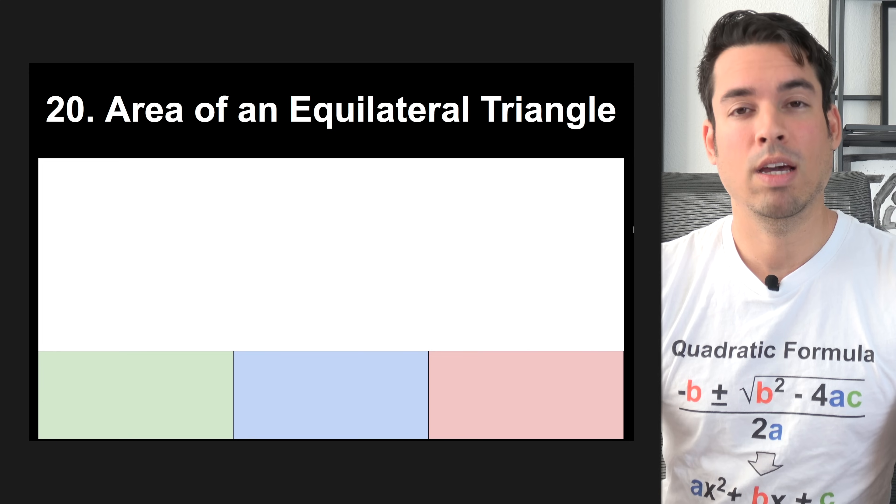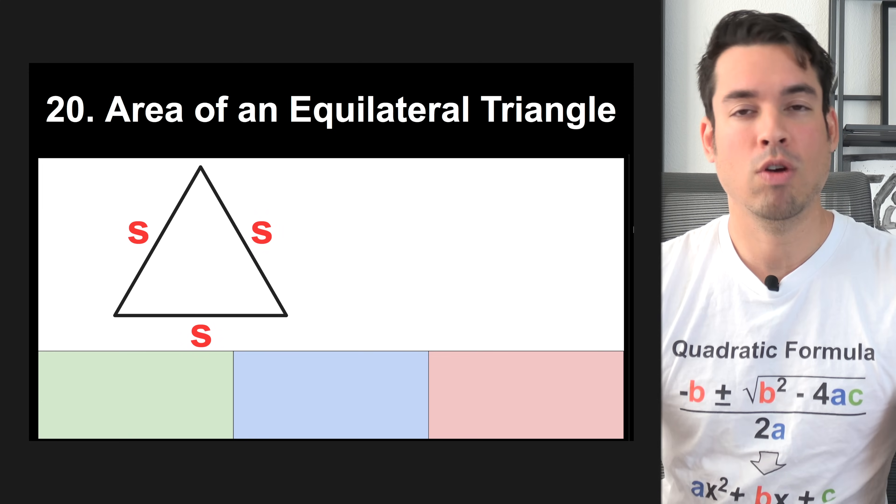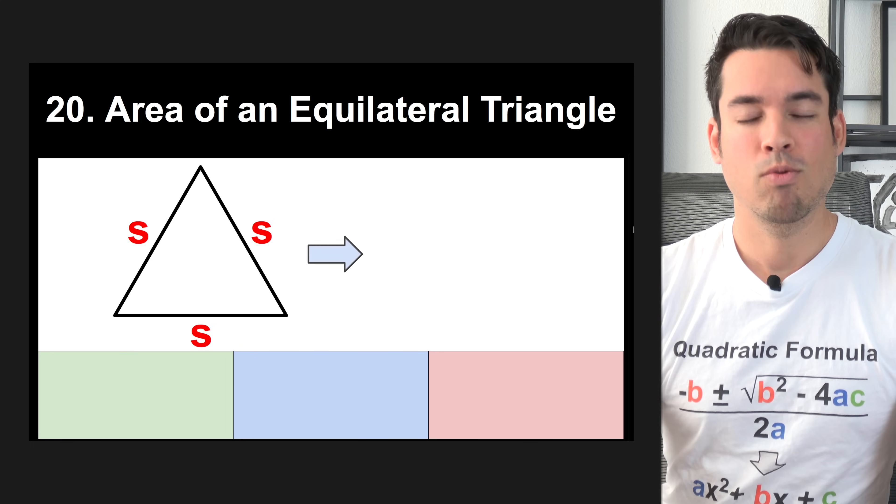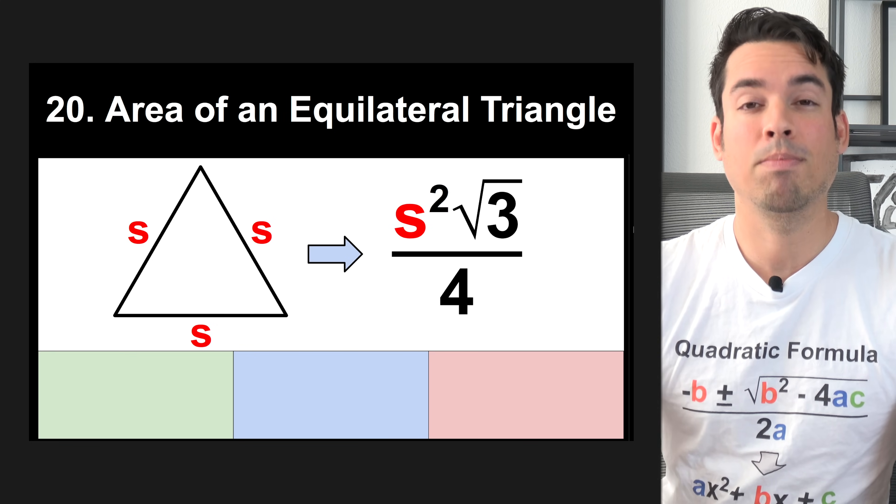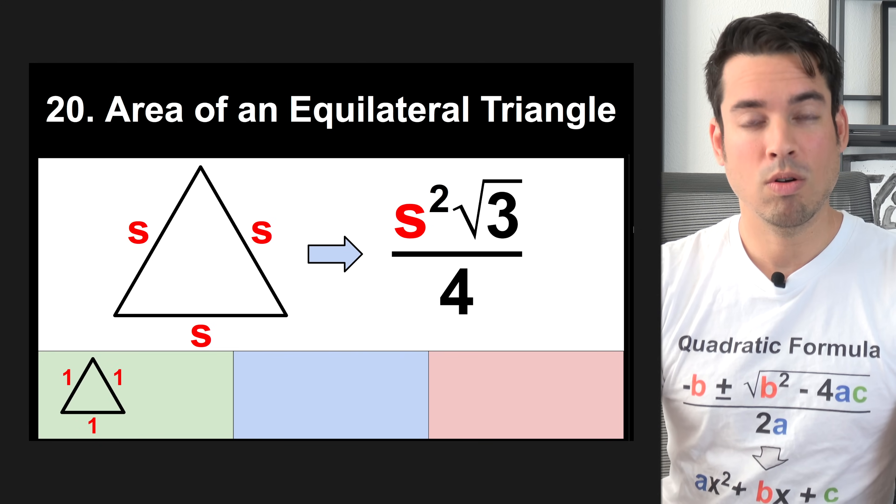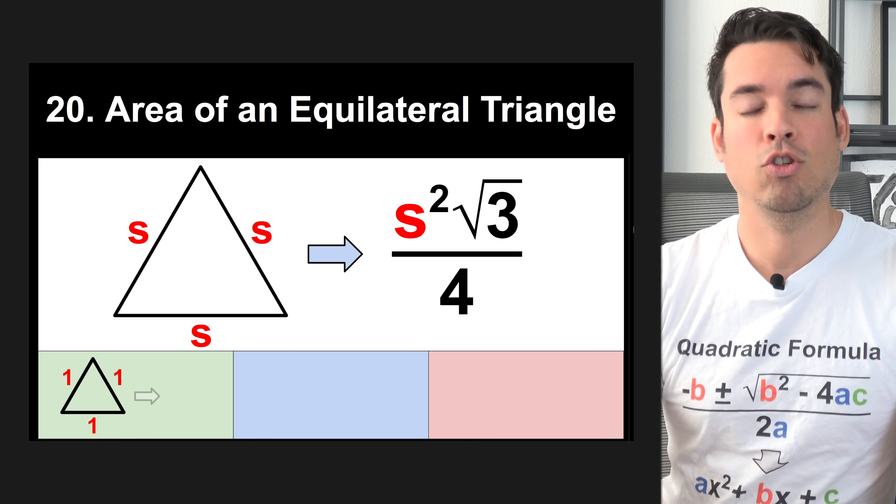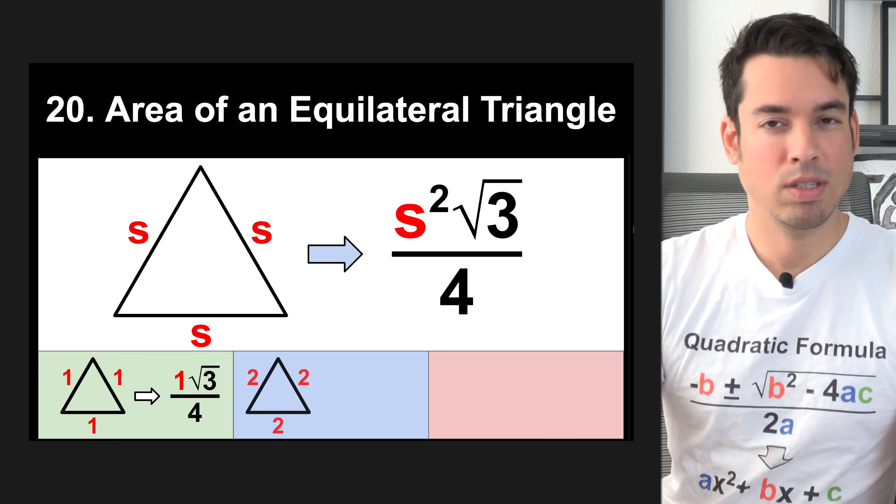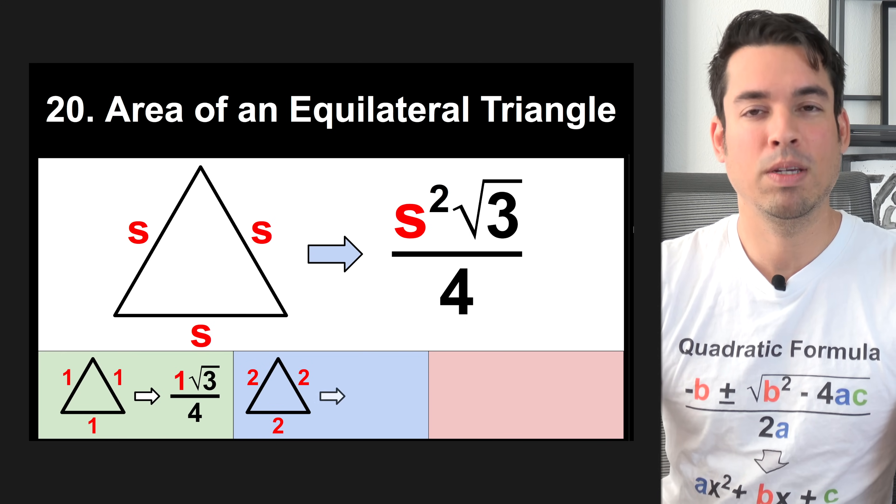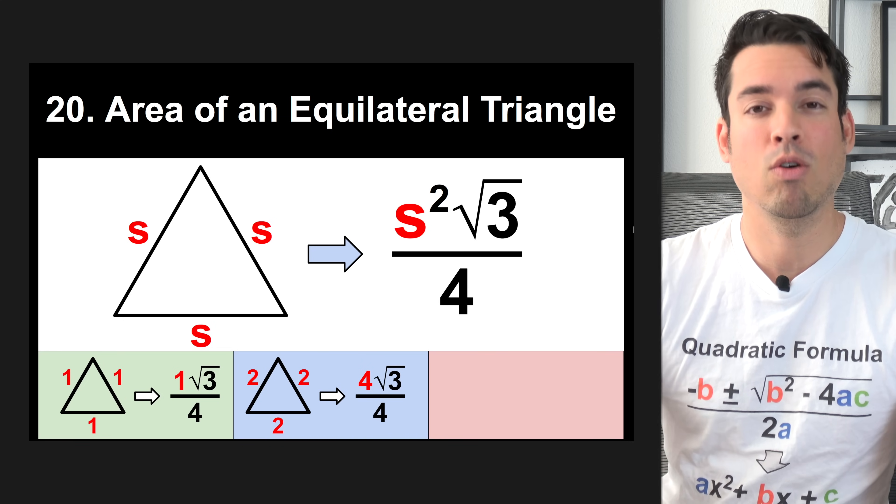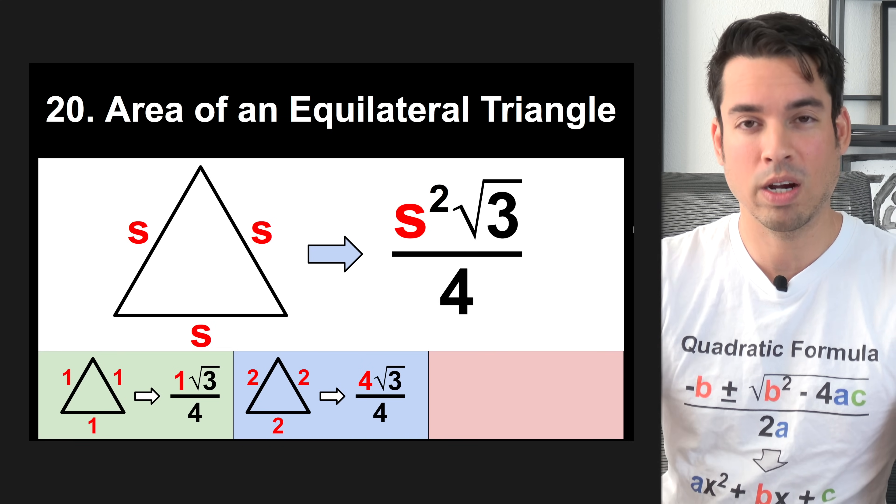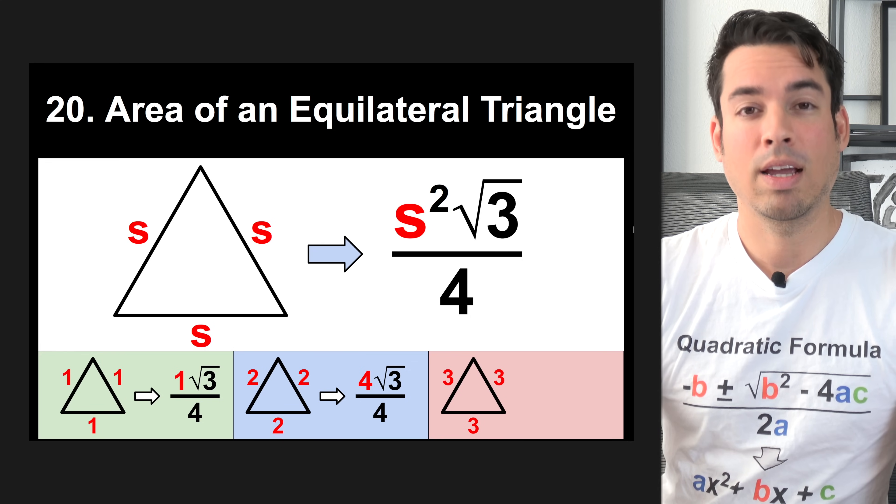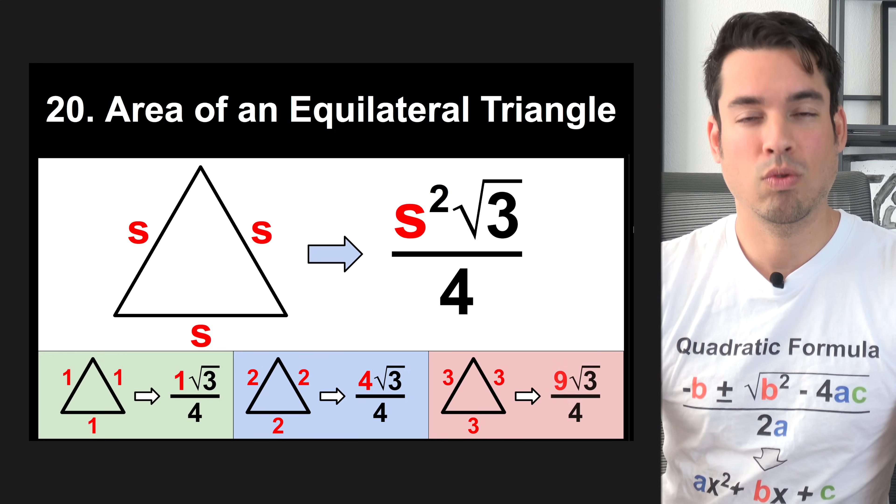Next, we have the formula for an equilateral triangle. An equilateral triangle is a triangle where all the sides are equal, all the angles are 60 degrees. The formula is s squared times the square root of 3 divided by 4. In this example, where all the side lengths are 1, the area of the triangle would be 1 times the square root of 3 over 4. In this example, where all the side lengths are 2, the area would be 4 times the square root of 3 over 4 because 4 is 2 squared. Last but not least, when we have an equilateral triangle with side lengths of 3, the area would be 9 square root 3 over 4.